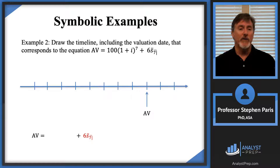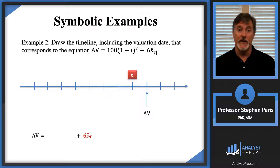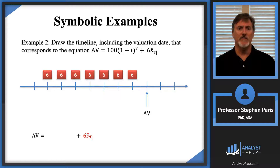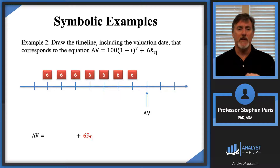Let's focus on the term in the expression that has the annuity symbol — the 6 times s-double-dot-angle-7. Six times s-double-dot-angle-7 is valuing seven payments of six, one period after the last payment. So the last payment of six must go one period before the valuation date. The valuation date is one period after the last payment of six, and now I know where all seven payments of six go. I'm valuing those seven payments of six one period after the last payment using the symbol 6 times s-double-dot-angle-7.